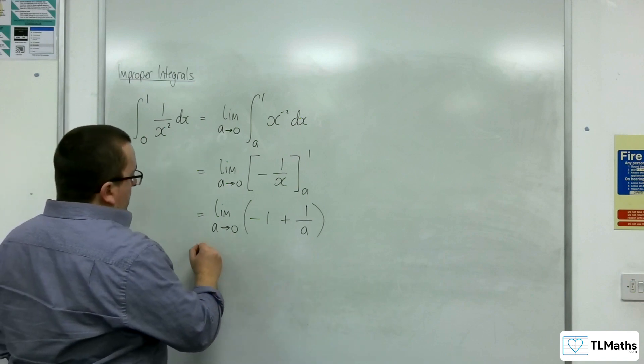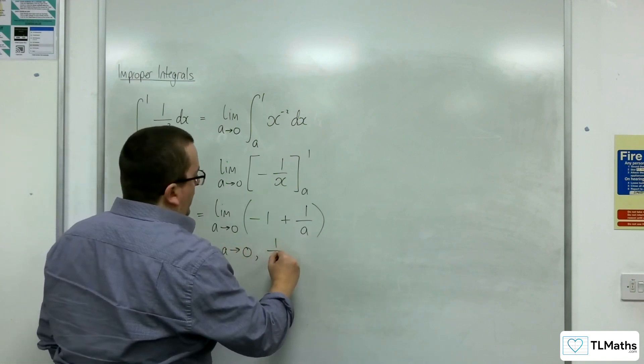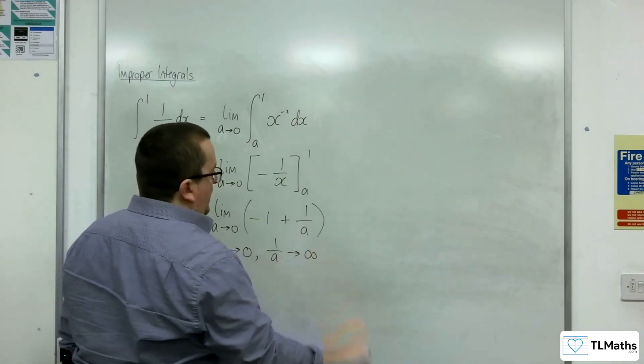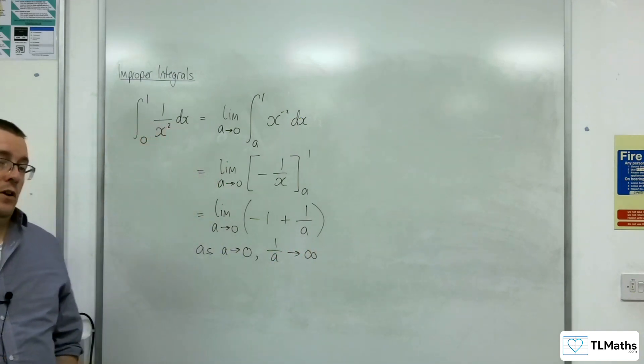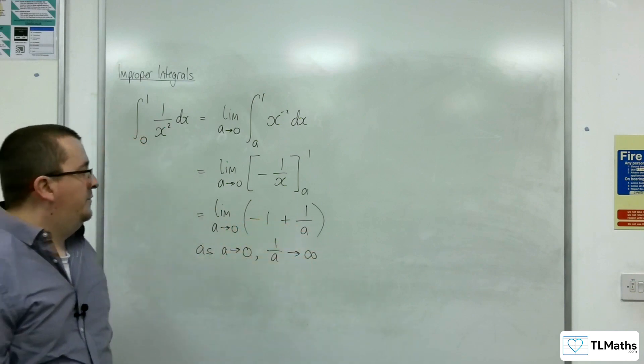Now as a tends to 0, 1 over a tends to infinity, and so this is divergent, this does not converge.